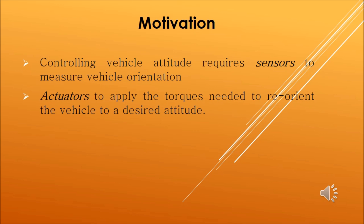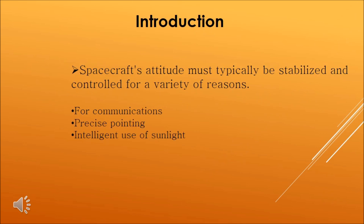Now the introduction. Attitude control is often times needed so that the spacecraft high gain antenna may be accurately pointed to earth for communication, so that onboard experiments may accomplish precise pointing for accurate collection and subsequent interpretation of data, and so that the heating and cooling effects of sunlight and shadow may be used intelligently for thermal control.